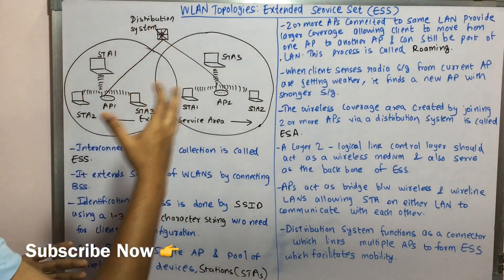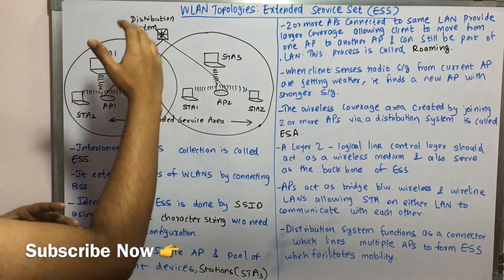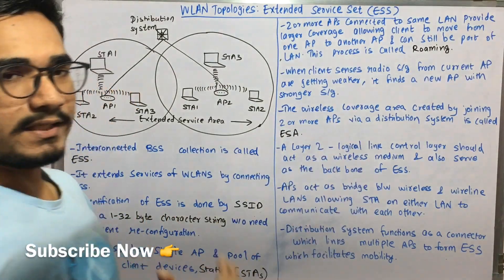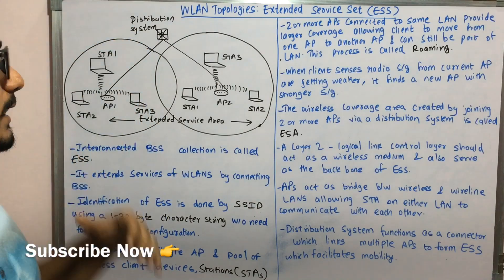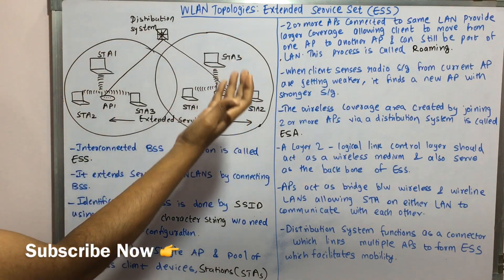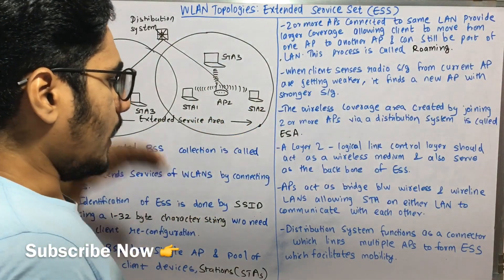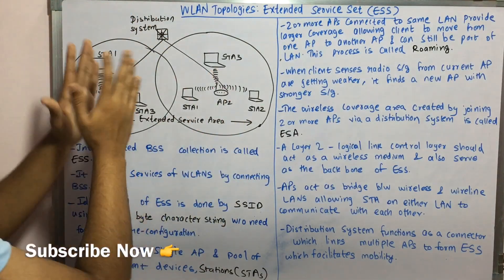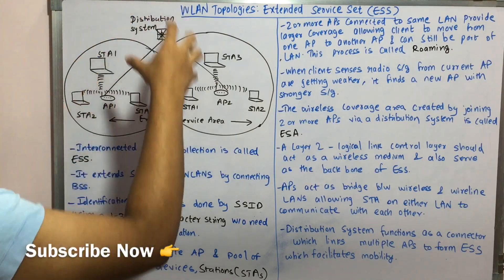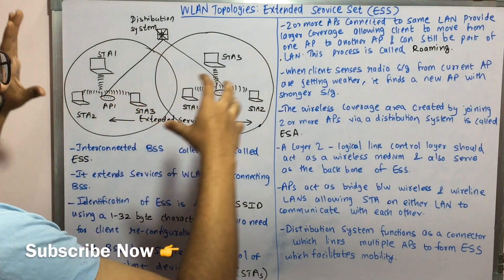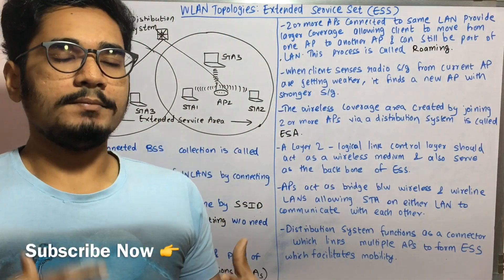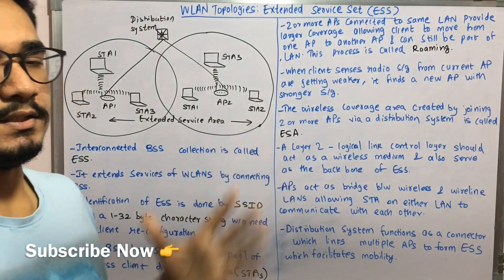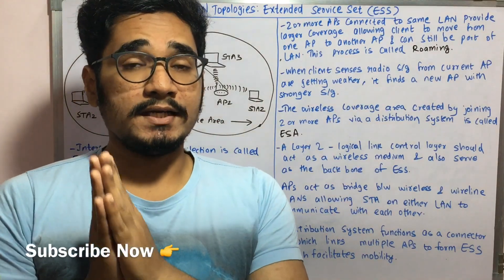In this setup, the APs act as a bridge between the wired and wireless systems — the wired LAN and the wireless LAN. Although the bridge is virtual, it allows STAs on either side to communicate with each other and move from one service area to another without getting calls dropped. The distribution service functions as a connector linking multiple APs to form the ESS, facilitating mobility. It connects different BSSs to together form the extended service area, providing a larger coverage for the ESA.